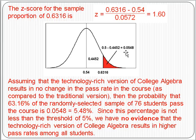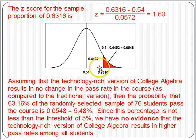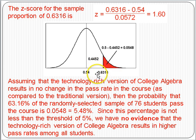Assuming the technology-rich version of College Algebra results in no change in the pass rate — the skeptic's hypothesis — the probability of obtaining this sample proportion of 0.6316 or more is 5.48%. This is very close to our threshold of 5% for what we consider rare, but it is slightly more. Since 5.48% is not less than 5%, we conclude that we have no evidence that the technology-rich version of College Algebra results in higher pass rates among all students.